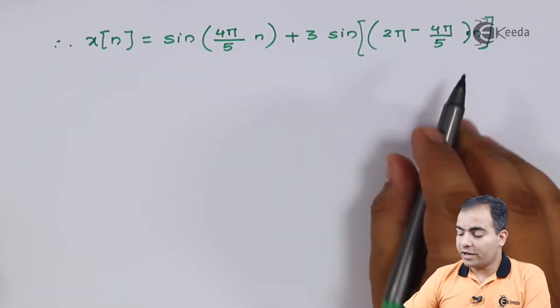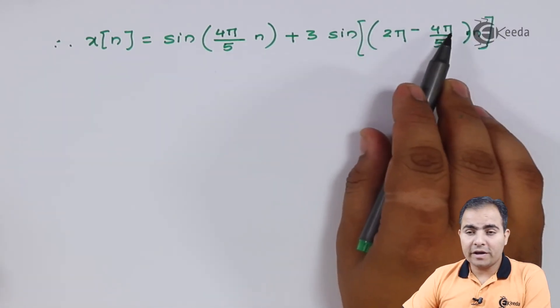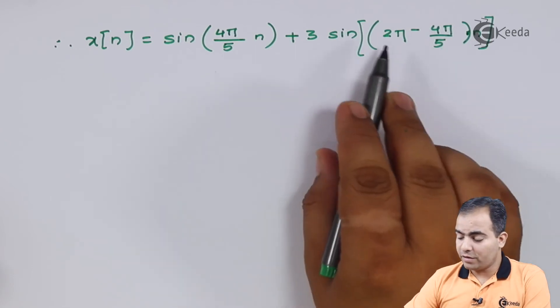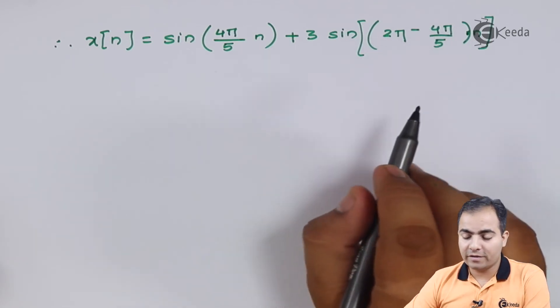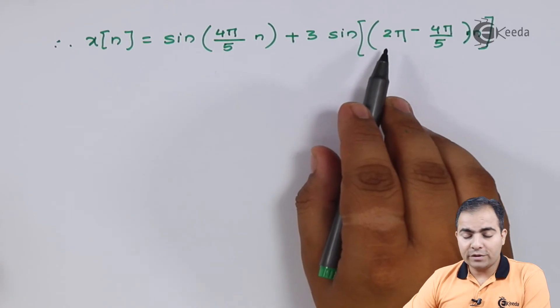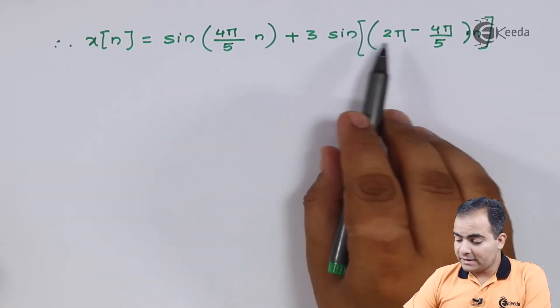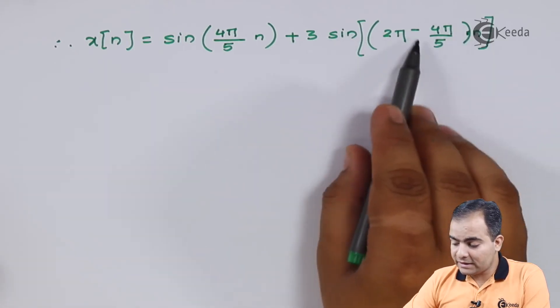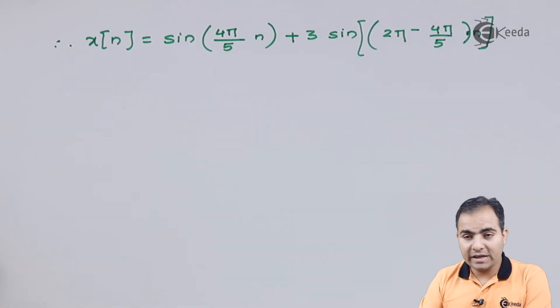Look at it. What I have done is replaced 6π/5 by 2π - 4π/5. Why have I written this equation in this form? Because as I said, sin(2π - θ) is always -sin(θ).